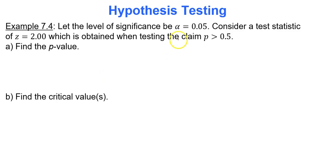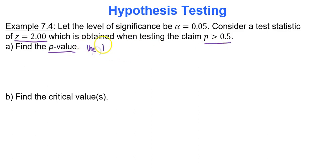Let the level of significance be alpha equals 0.05 and consider a test statistic of 2, obtained when testing the claim p is greater than 0.5. First I want to find the p-value. Always use the test statistic to find the p-value — that is the relationship. The test statistic is used to find the p-value.